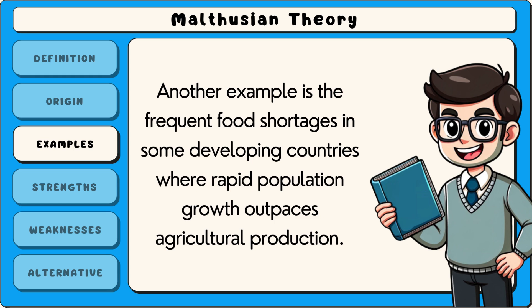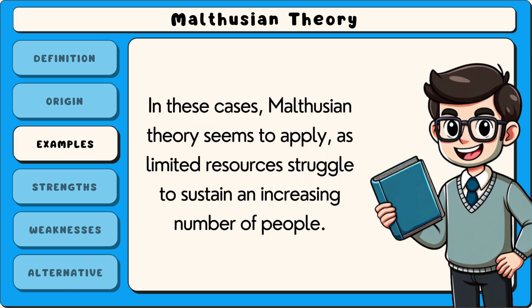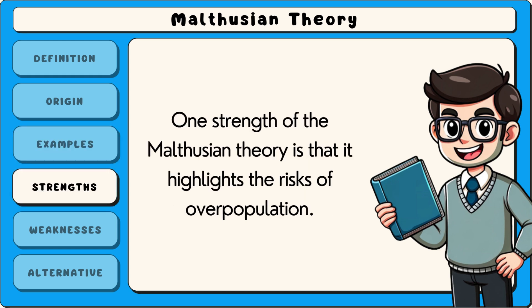Another example is the frequent food shortages in some developing countries, where rapid population growth outpaces agricultural production. In these cases, Malthusian theory seems to apply as limited resources struggle to sustain an increasing number of people.